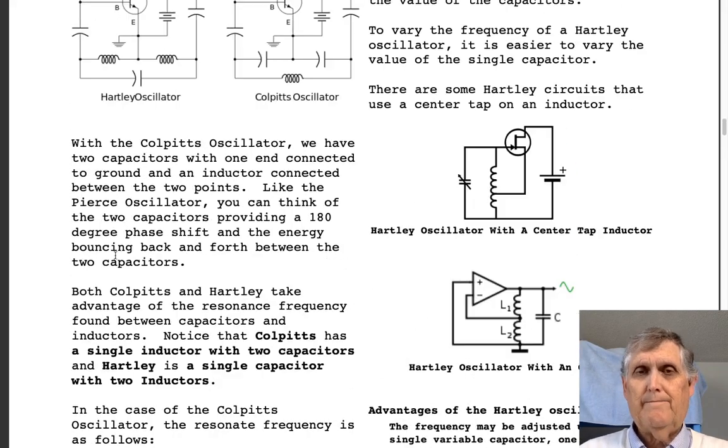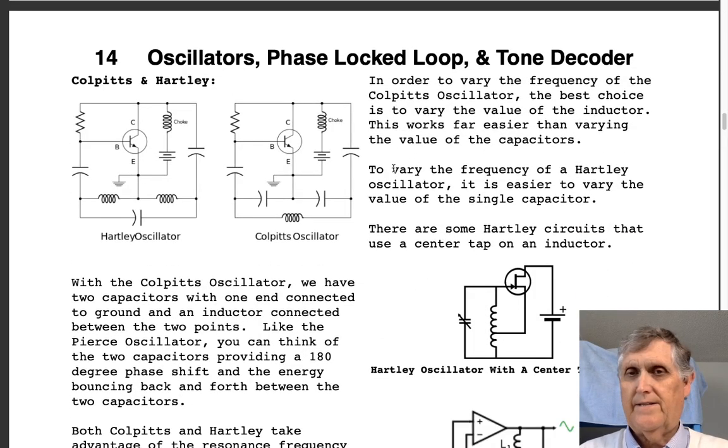If you wanted to vary the frequency of the oscillator, the Colpitts is probably the best choice because you can vary the value of the inductor, which is probably a lot easier than trying to vary the value of the capacitor. We have limited range here; a lot more options with Colpitts.